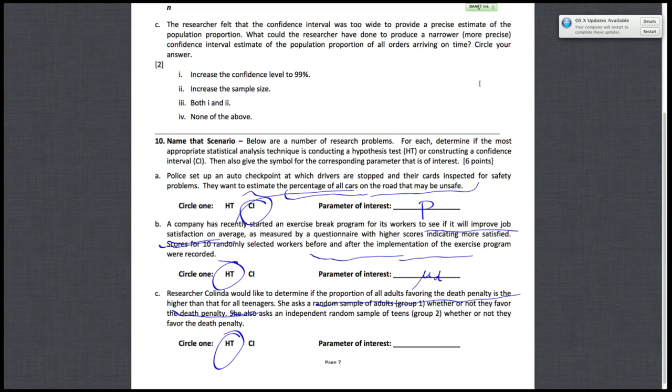And, since your sample of adults, group one, and your sample of teens, group two, are not matched together, so you're just taking a random sample of adults and then separately a random sample of teens, there's no matching. So, it's just a two population proportion test. So, your parameter of interest is P1 minus P2.